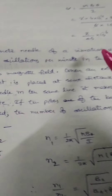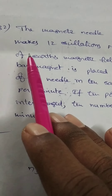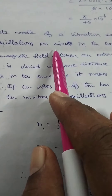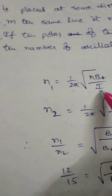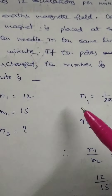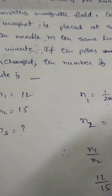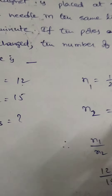The magnetic needle of a vibration magnetometer makes 12 oscillations per minute in the horizontal component of Earth's magnetic field. The first case: n1 = (1/2π)√(MB/I). Also, n1 is given as 12 oscillations per minute. n1, n2, and n3 should all be taken per minute.